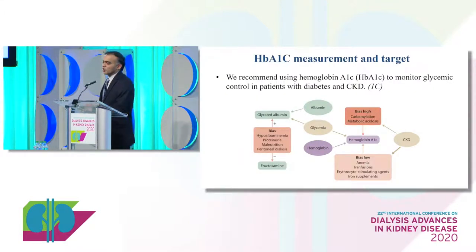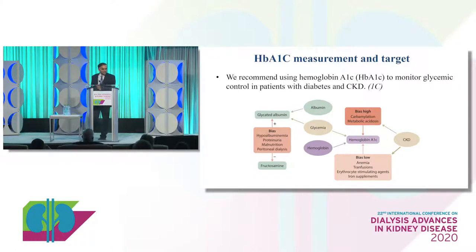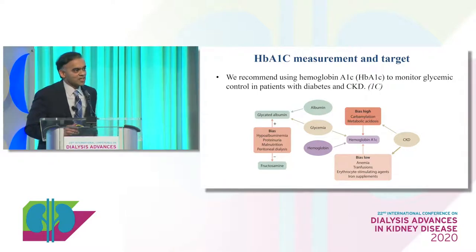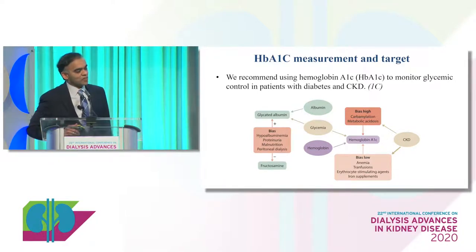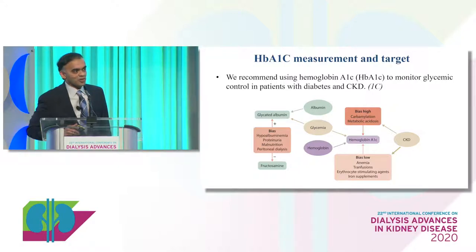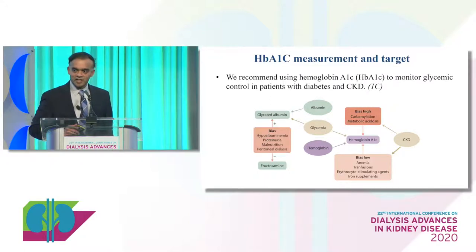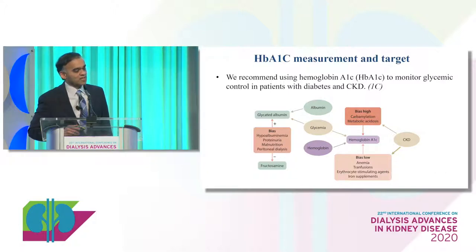The first recommendation concerns hemoglobin A1C measurement and target. Should we measure HbA1c in people with diabetes and CKD? The answer is yes, graded 1C. We know HbA1c can be falsely low in patients with anemia or transfusions, or falsely high with carbamylation or metabolic acidosis. Continuous blood glucose monitoring tools have become available but have not been tested in CKD populations. Taking all that into consideration, the workgroup concluded we still need to use HbA1c in people with diabetes and CKD.